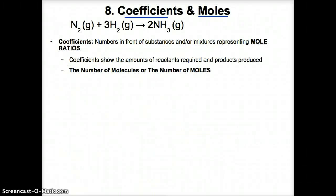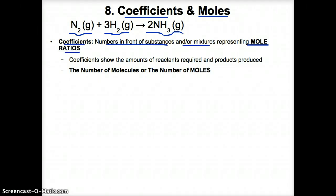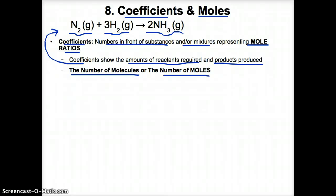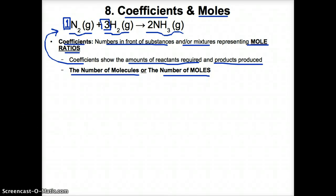Finally, let's talk about coefficients in moles. Consider the reaction: N₂ gas + 3H₂ gas → 2NH₃ gas. Coefficients are the numbers in front of substances that represent mole ratios. No number in front of N₂ implies one mole of N₂. The coefficient 3 in front of H₂ implies 3 moles of H₂. The coefficient 2 in front of NH₃ implies 2 moles of NH₃ produced. Coefficients tell you the number of moles or molecules of each substance in a reaction.